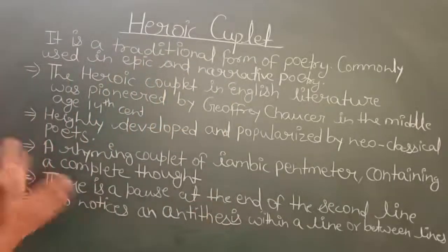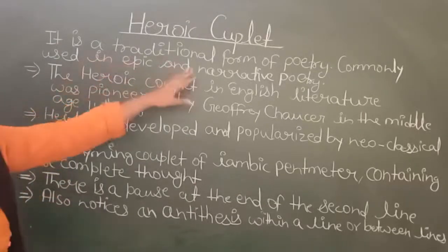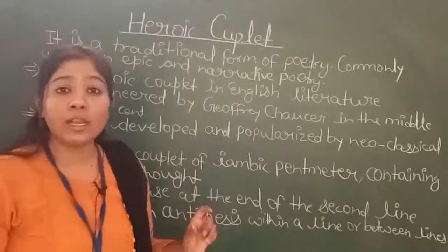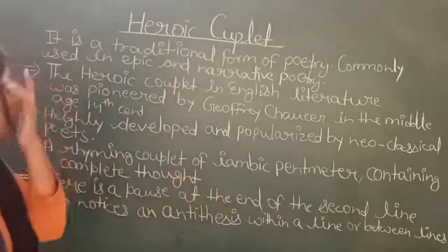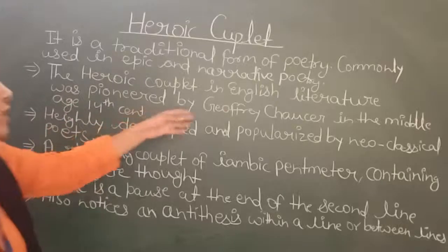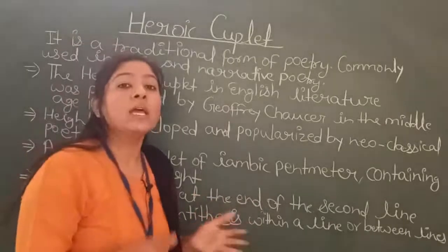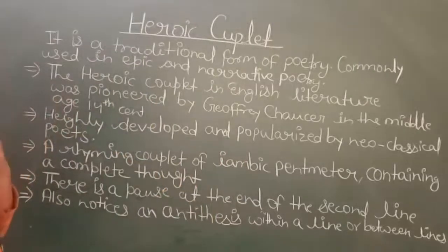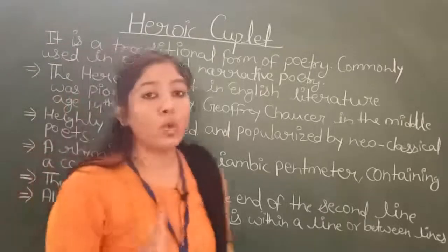Heroic Couplet is a type and traditional form of poem, mostly used in epic and narrative poetry. Epic means long poems. The Heroic Couplet in English Literature was pioneered by Geoffrey Chaucer, a 14th century poet. Our literature is authentically considered to have started from Chaucer. He was the first to use the heroic couplet.